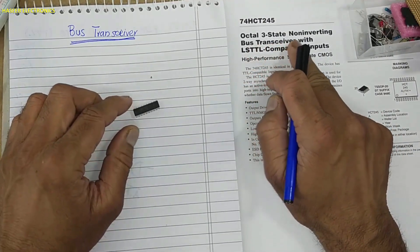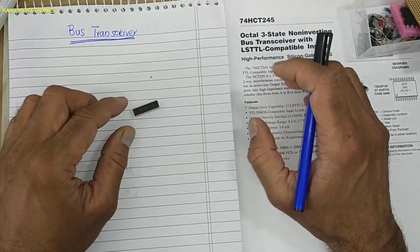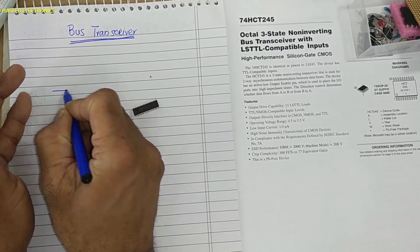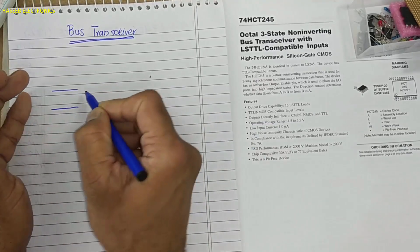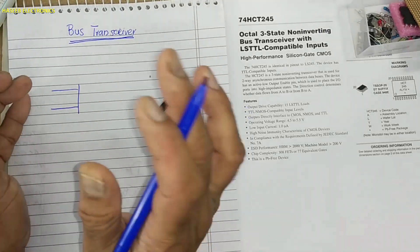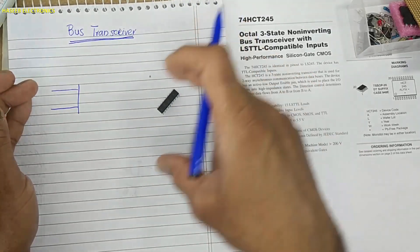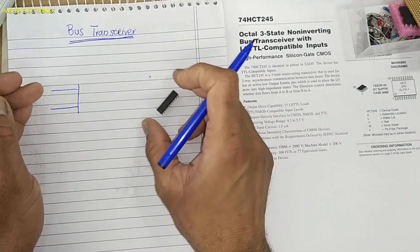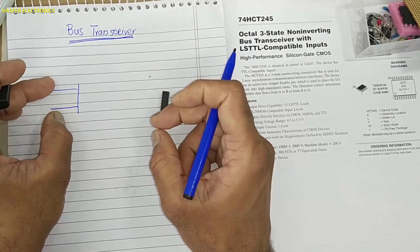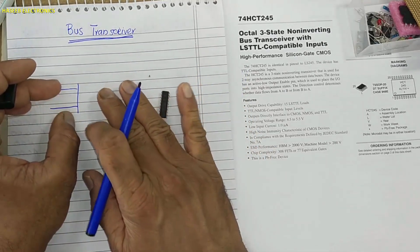Octal three-state non-inverting bus transceiver. What is bus transceiver? When we say microcontroller, microprocessor, microcomputer, the processor itself has very limited current. It cannot drive many items at the same time because every component will need some current.